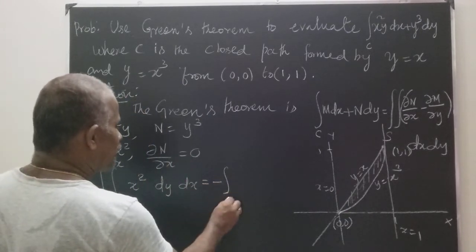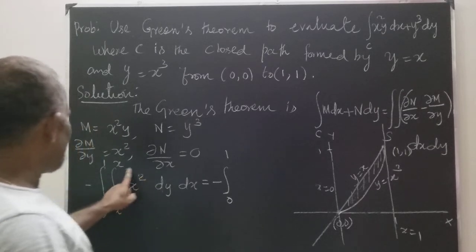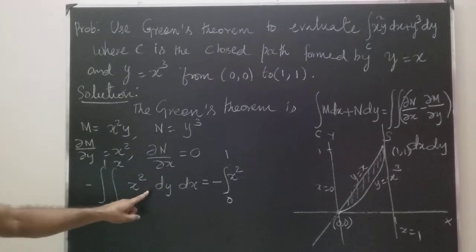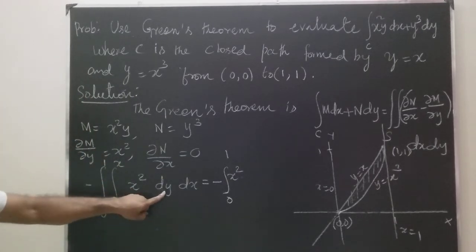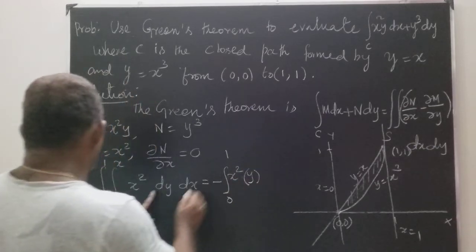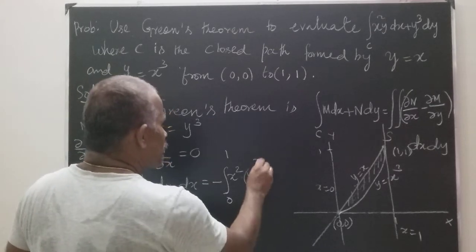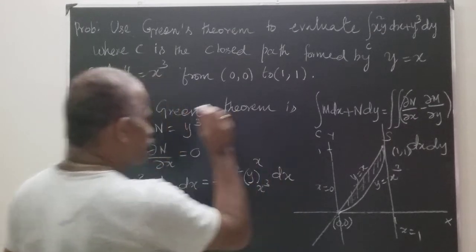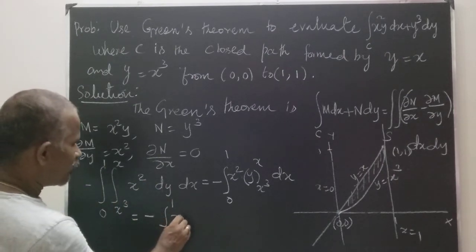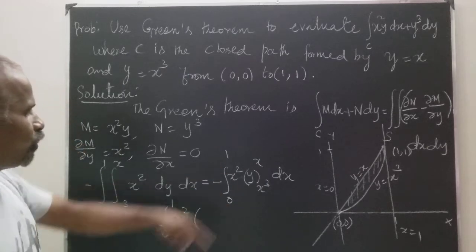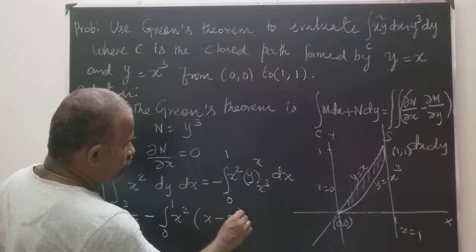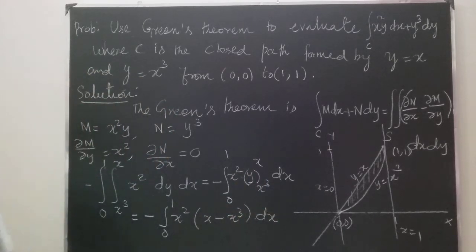So the integral becomes minus the integral from 0 to 1 of x squared, integrating dy from x cubed to x, which keeps x squared constant. Integrating dy gives y, evaluated from x cubed to x, times dx. This equals minus the integral from 0 to 1 of x squared times (x minus x cubed) dx.